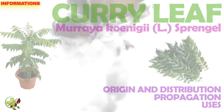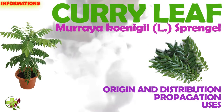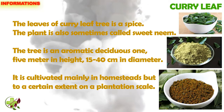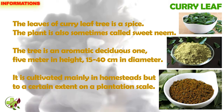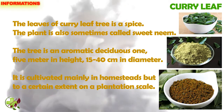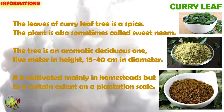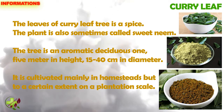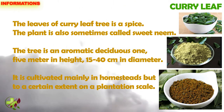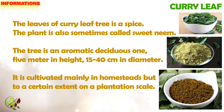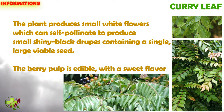Curry leaf, Muraya koenigii, is a spangle — the leaves of the curry leaf tree are used as a spice. The plant is also sometimes called sweet neem. The tree is an aromatic deciduous plant, one to five meters in height and 15 to 40 centimeters in diameter. It is cultivated mainly in homesteads, but to a certain extent on a plantation scale.